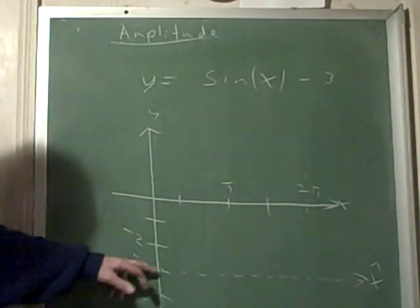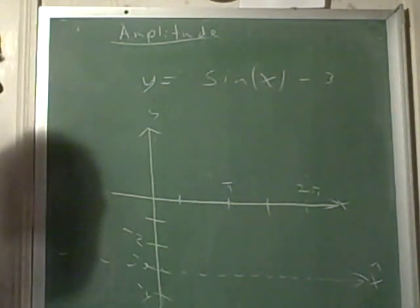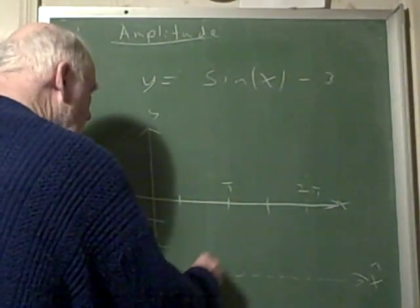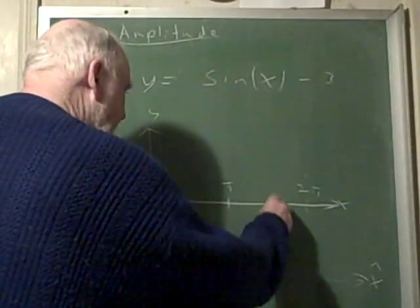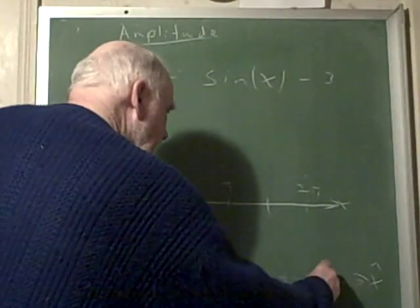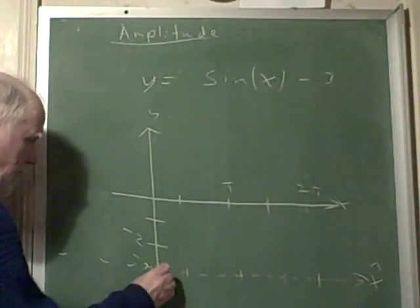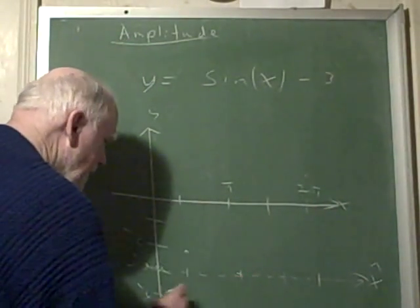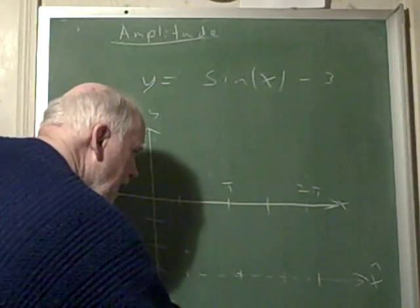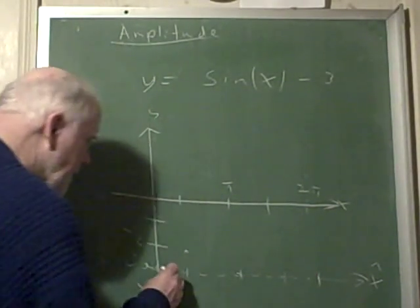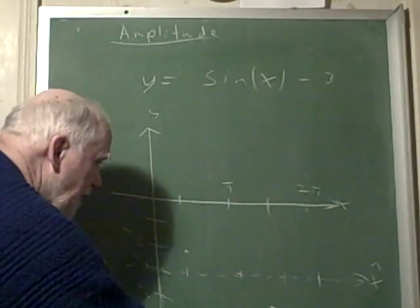So it's going to go as high as negative 2 and as low as negative 4. I can put my four increments on this false axis like this and just draw the sine down to negative 4 here and finally back to zero there.